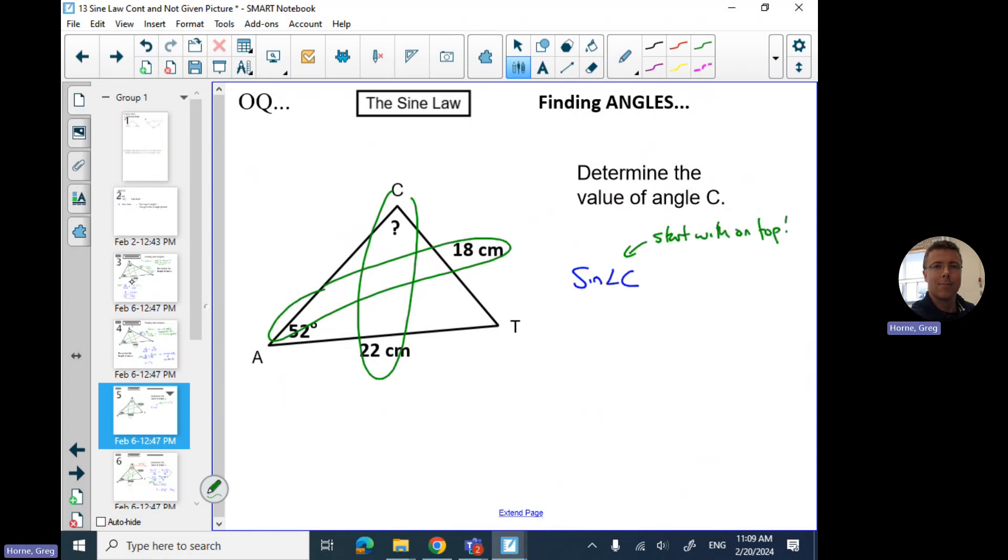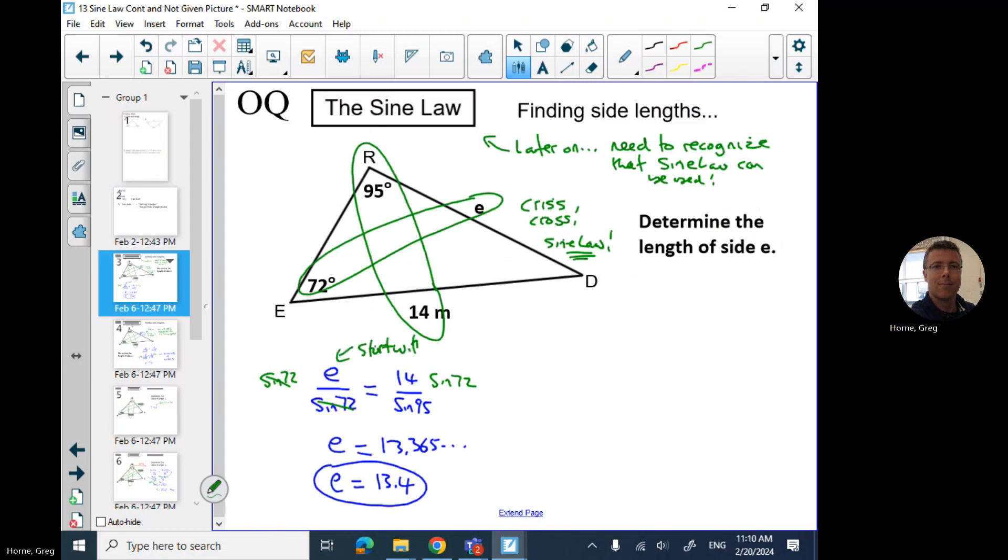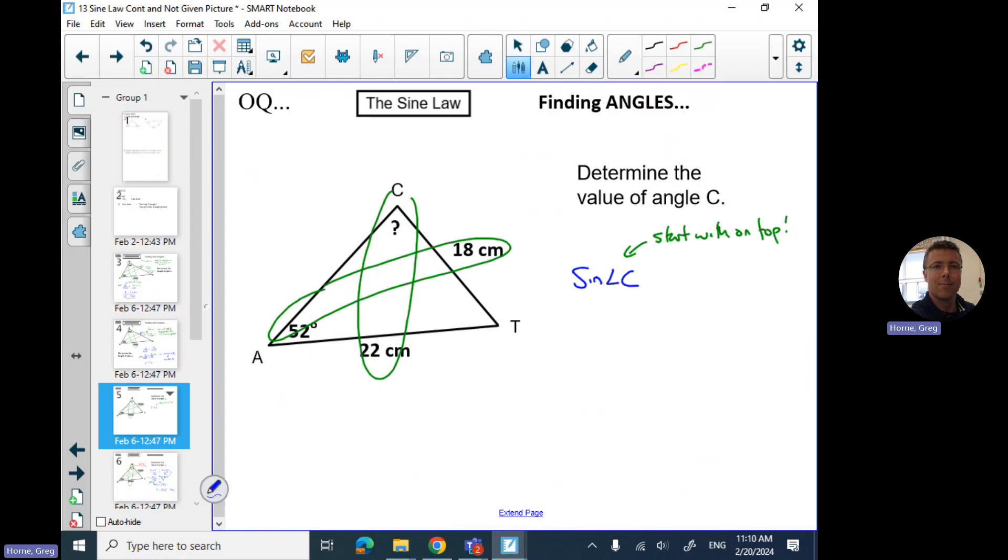This makes your algebra work a little bit easier. Starting with this on top makes your leg easier, work smarter. So sine of C over the opposite side 22 is equal to sine of the other angle that we know, we're working with 52, sine of 52 over 18, the opposite side. For this one we have 22 multiplied, and that's going to give me sine C left over. So over here I've got sine of 52 multiplied by 22, divided by 18.